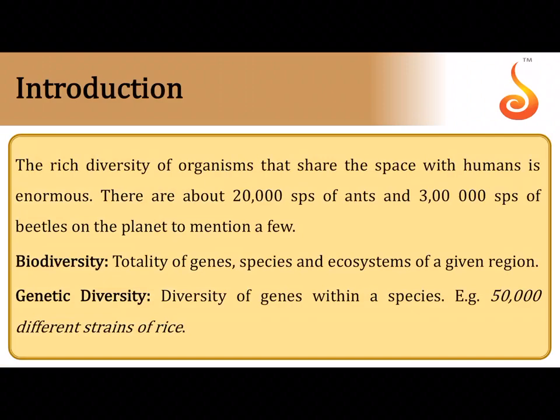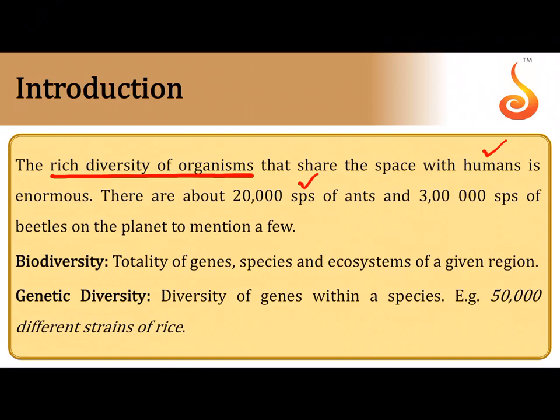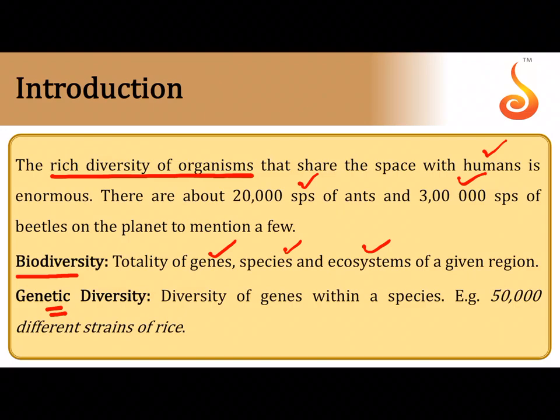Now moving on to the next chapter — Biodiversity and Conservation. We are a rich diversity of organisms occupying this planet today; humans are the dominant species. There are about 20,000 species of ants and 3 lakh species of beetles on this planet. Biodiversity means the totality of genes, species, and ecosystems occupying a particular region, covering genetic diversity, ecological diversity, and species diversity.